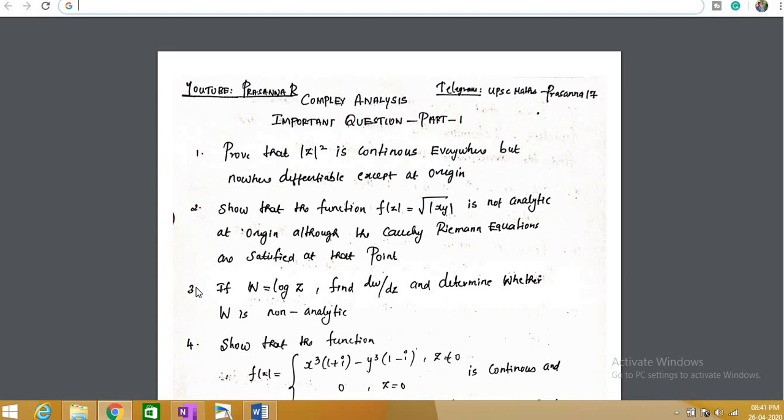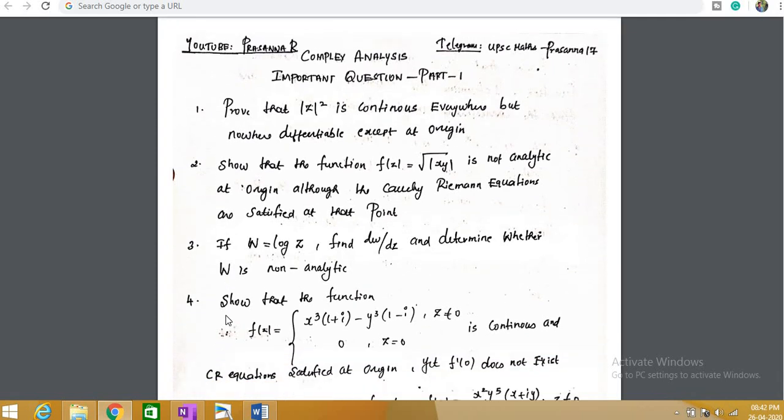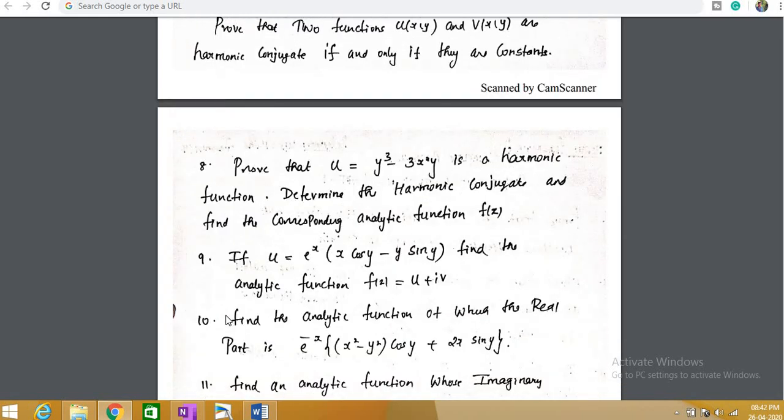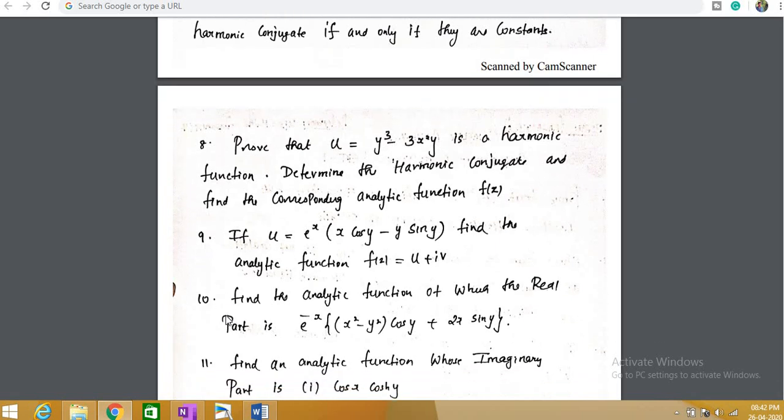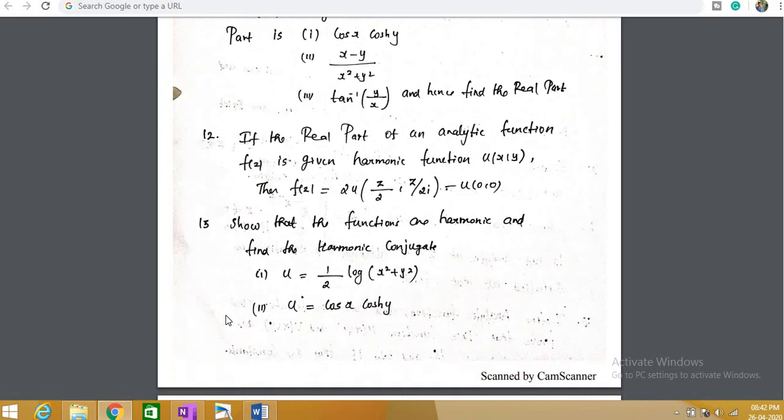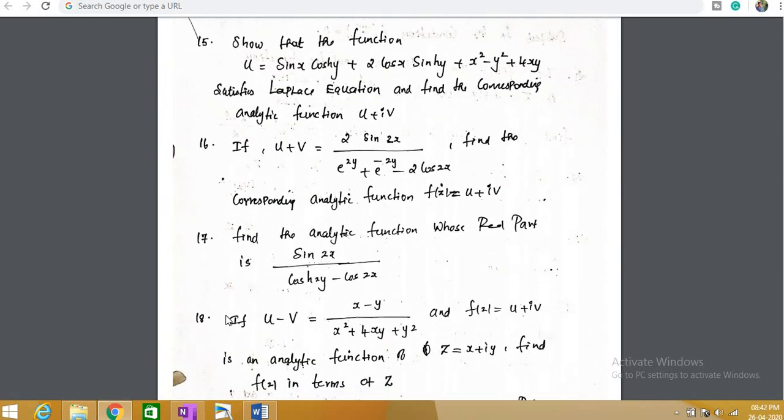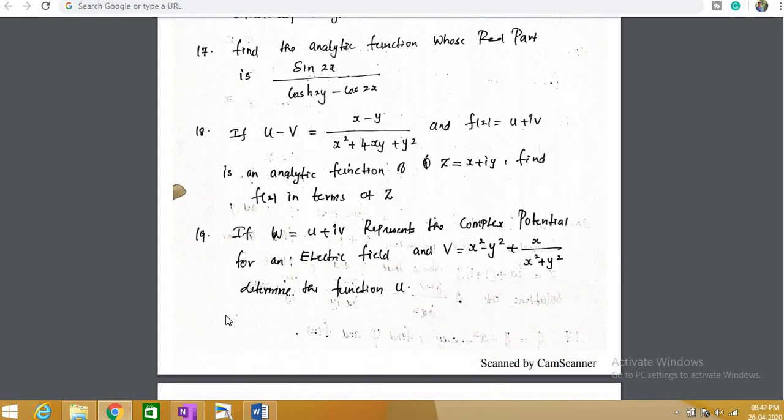There are 24 questions here. The first question is: prove that mod Z square is continuous everywhere but not differentiable except at origin. If you've watched my complex analysis playlist, I'm sure you will answer all questions. But there are some questions that are very tricky and tough. If you want me to make solutions for all questions, I am ready if I receive more than 50 comments. If you want solutions, you have to comment.